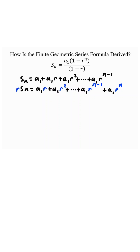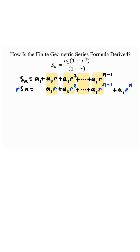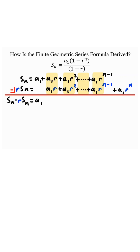Now let's shift the right side of the equal signs a little bit over, and we'll notice all these highlighted parts are all the same. So if we were to subtract them off, they will cancel. On the left side of the equal sign, we get S of n minus r times S of n. On the right side, we have a sub 1, and all the highlighted yellow parts cancel, minus a sub 1 times r to the power of n.